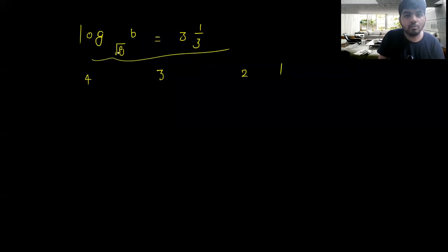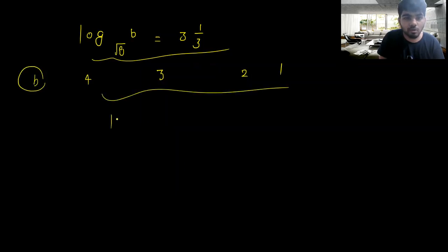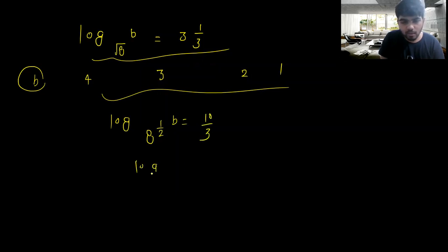We are given this equation and asked which value of b will satisfy it. We have the power of 8 here and this is 10/3. How can I write 8 as a power? I can write 8 as 2³, so it will be 3 by 2.